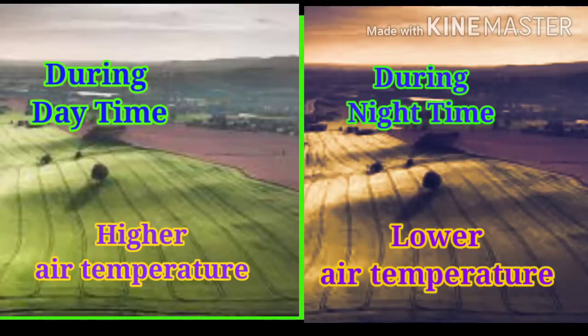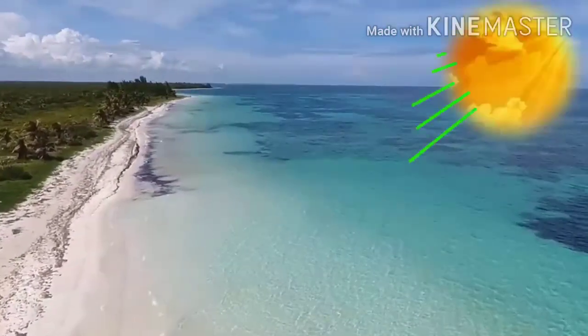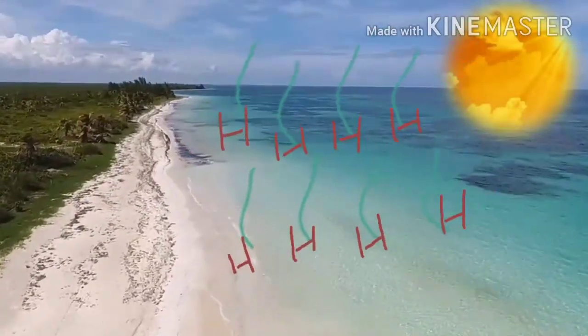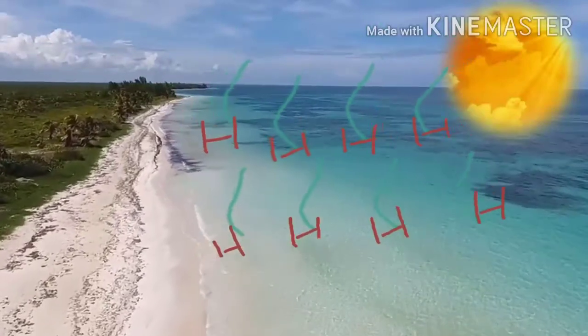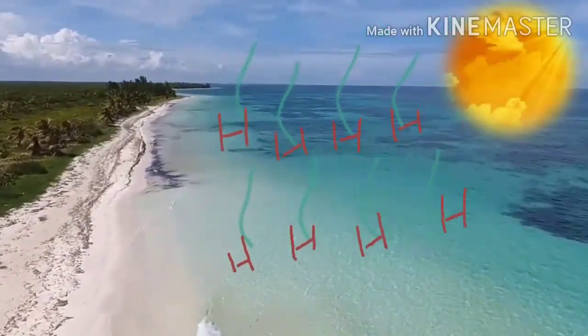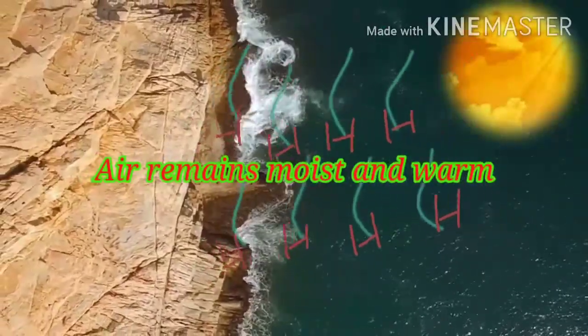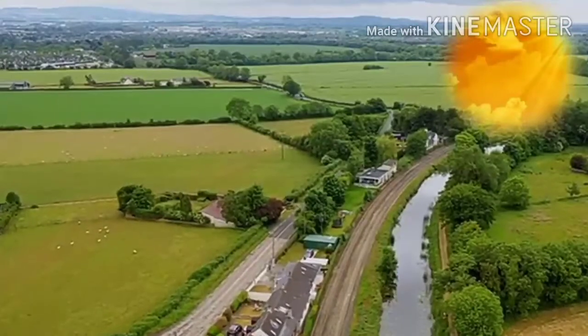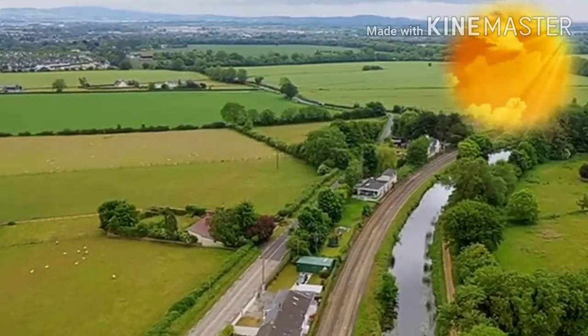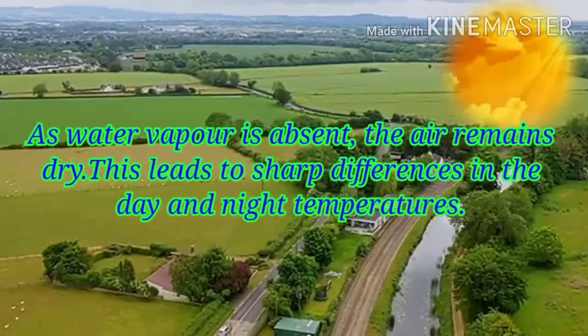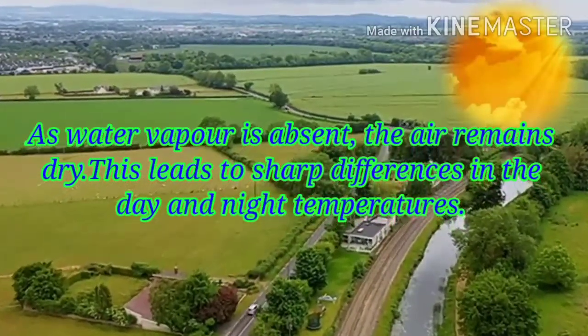Contrary to this, the temperature of air in the continental areas is higher during daytime and lower at night. In the coastal areas, because of the heating of the seawater, water vapors get mixed in air. These water vapors hold the heat in the air. As a result, the air in the coastal areas remains moist and warm. Conditions in the continental areas are the opposite. As water vapor is absent, the air remains dry.